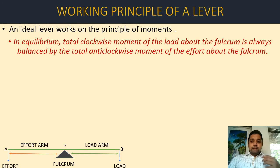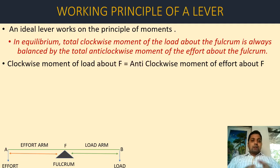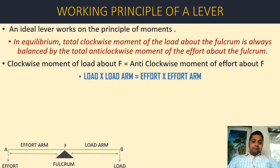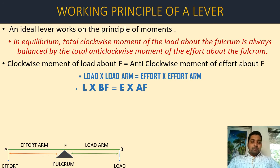Deriving this principle: by the principle of moments, when a body is in equilibrium, total clockwise moment equals total anti-clockwise moment. The clockwise moment is load × BF (load arm), and the anti-clockwise moment is effort × AF (effort arm). Therefore: L × BF = E × AF, which gives us load × load arm = effort × effort arm.